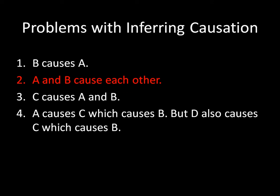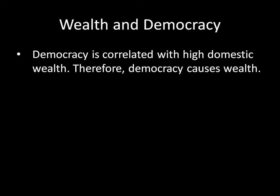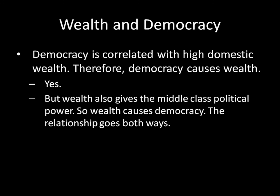Second, it could be that A and B are causing each other. Sticking to political science examples, let's talk about wealth and democracy. Democracy is correlated with high domestic wealth, and therefore you might believe that democracy causes wealth. That's true to an extent — democracy promotes rule of law and prevents predatory taxation from dragging down the economy. So democracy does cause wealth. But on the other hand, wealth causes democracy. Why? Wealth gives the middle class political power, and when the middle class has political power, you get democracy. So the relationship is going both ways — you have bidirectional causation. You're still seeing correlation between democracy and wealth; it's just that both things are causing each other.